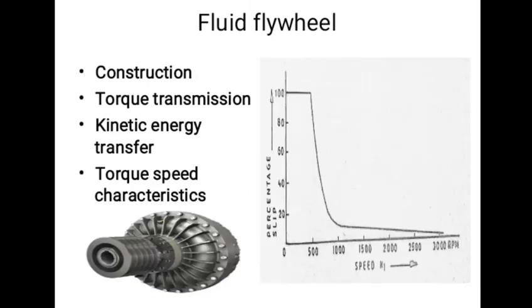Figure shows the variation of percentage slip with speed. It is seen that for engine speed below about 500 RPM, percentage slip is 100, which means clutch is fully disengaged.